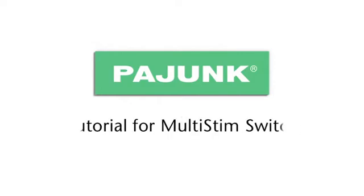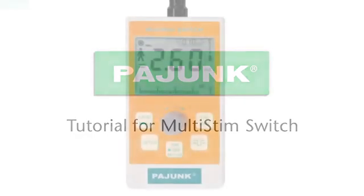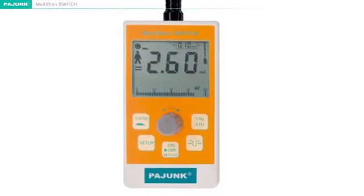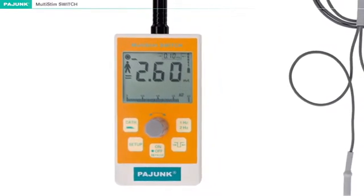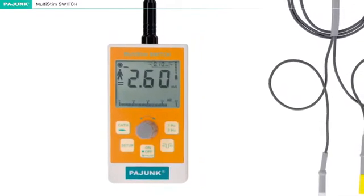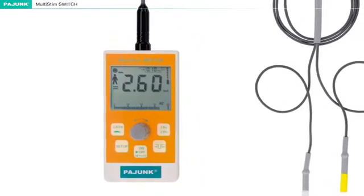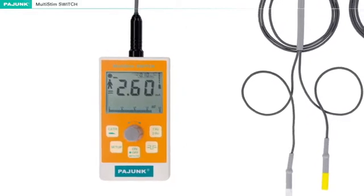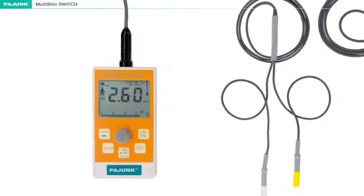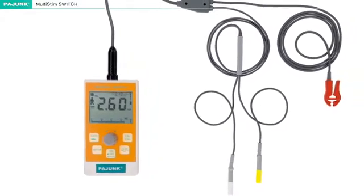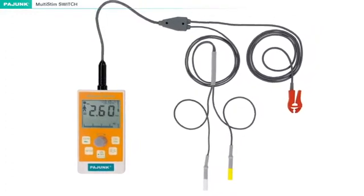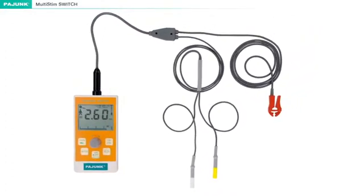Tutorial for Multi-Stim Switch. The Pionk Multi-Stim Switch can be used for the location of both peripheral nerves and for epidural stimulation. Its application is recommended for all purposes requiring the identification of nerves, nerve bundles, and nerve roots. With this device, Pionk has laid the foundation for a new generation of nerve stimulators, which will guarantee maximum safety and efficiency.